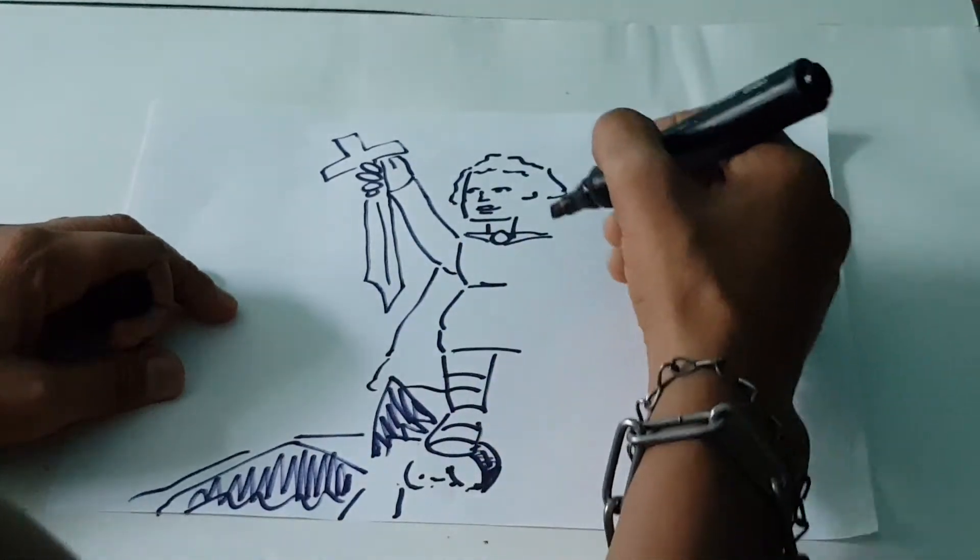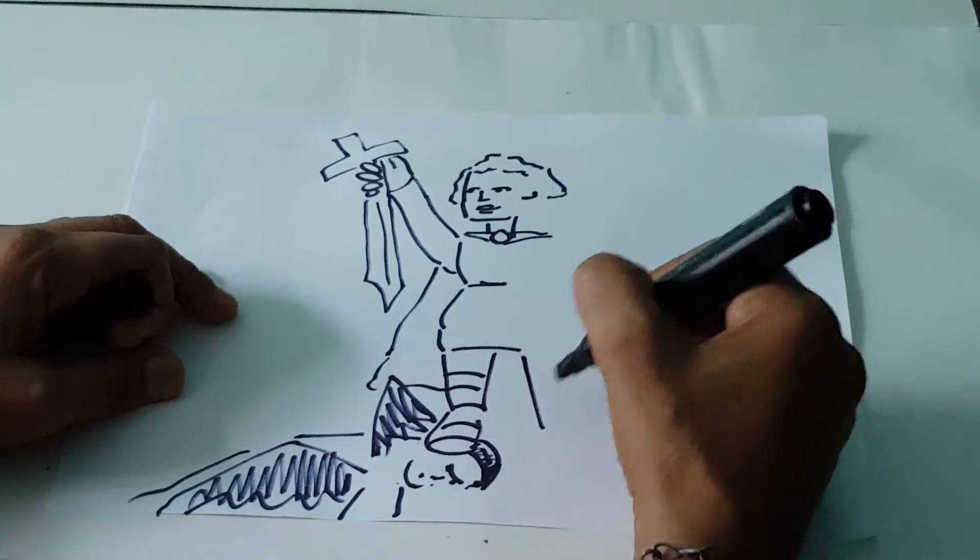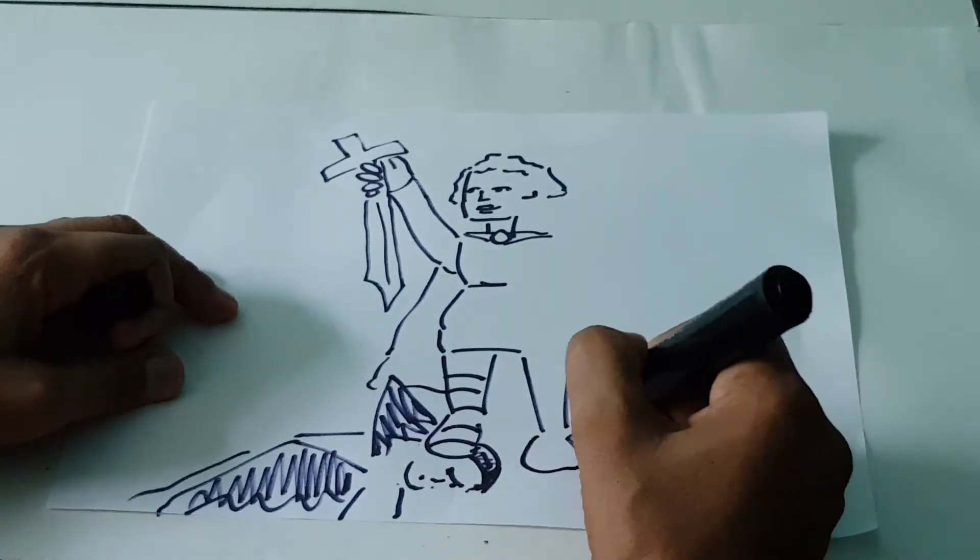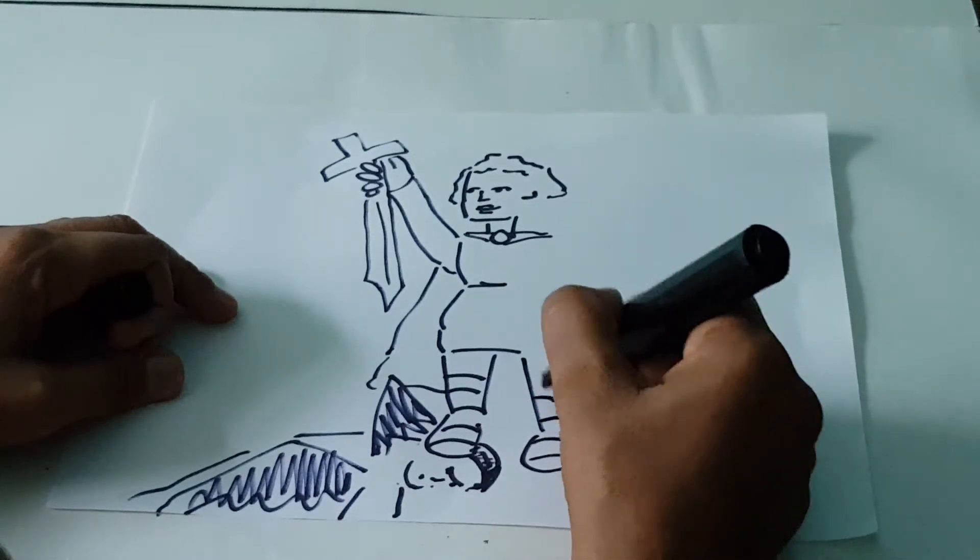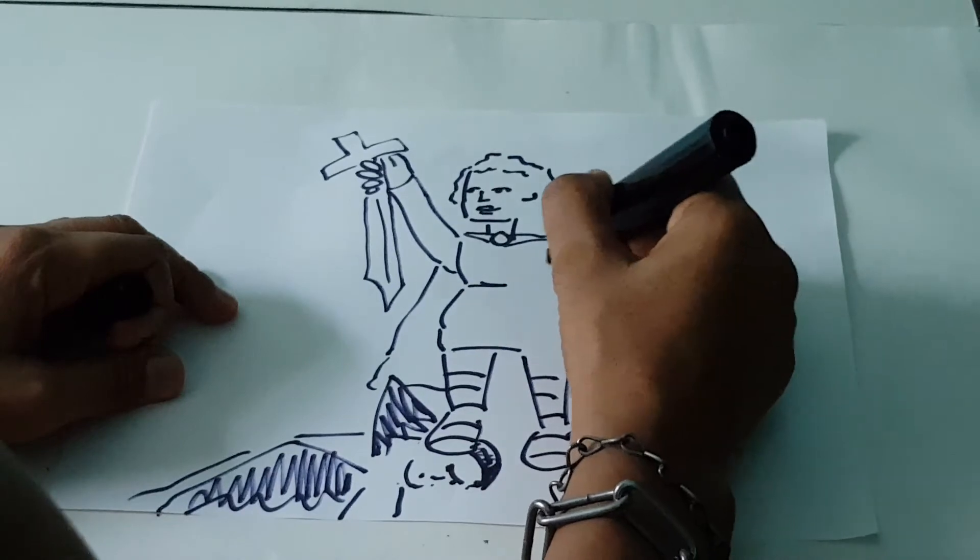This way like that and his other leg I'm going to draw like that. He's going to be holding a shield.